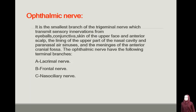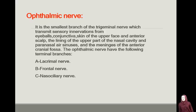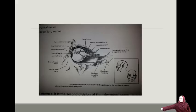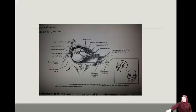The ophthalmic nerve is a small branch of the trigeminal nerve which transmits sensory innervations from the eyeballs, conjunctiva, skin of the upper face and anterior scalp, the lining of the upper part of the nasal cavity and paranasal sinuses, and the meninges of the anterior cranial fossa. The ophthalmic nerve has the following terminal branches: A) lacrimal nerve, B) frontal nerve, C) nasociliary nerve.